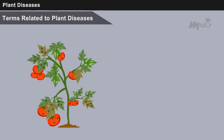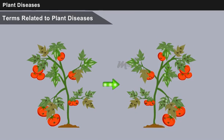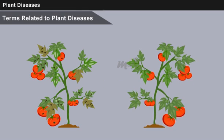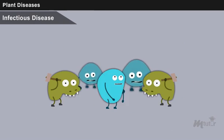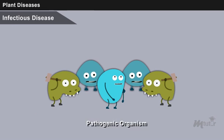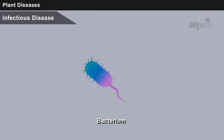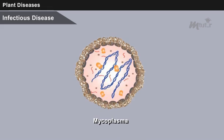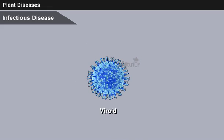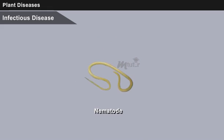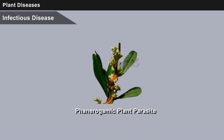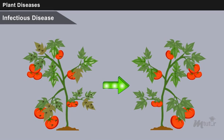The diseases of plants may either be infectious or non-infectious. Infectious disease refers to the disease caused by a pathogenic organism, such as a fungus, bacterium, mycoplasma, virus, viroid, nematode, or phanerogamic plant parasite. It can spread from a diseased plant to a healthy plant.